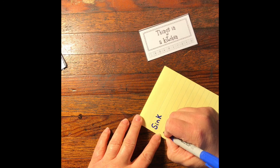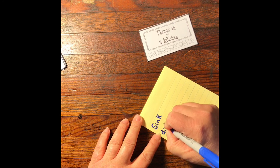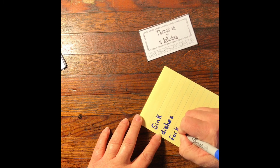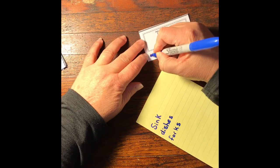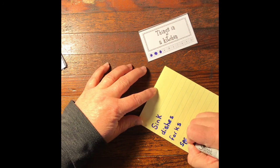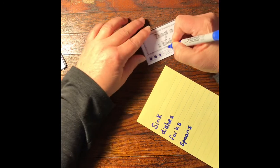Like sink, dishes, forks. I forgot to cross them out as I went. Let's see, spoons, cross it off.